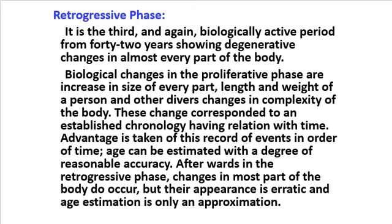Biological changes in the progressive phase include increases in the size of every part, length and weight of a person, and other diverse changes in the complexity of the body. These changes correspond to an established chronology having relations with time. Advantage is taken of this record of events in order of time; age can be estimated with a degree of reasonable accuracy. Afterwards, in the retrogressive phase, changes in most parts of the body do occur but their appearance is erratic, and age estimation is only an approximation.